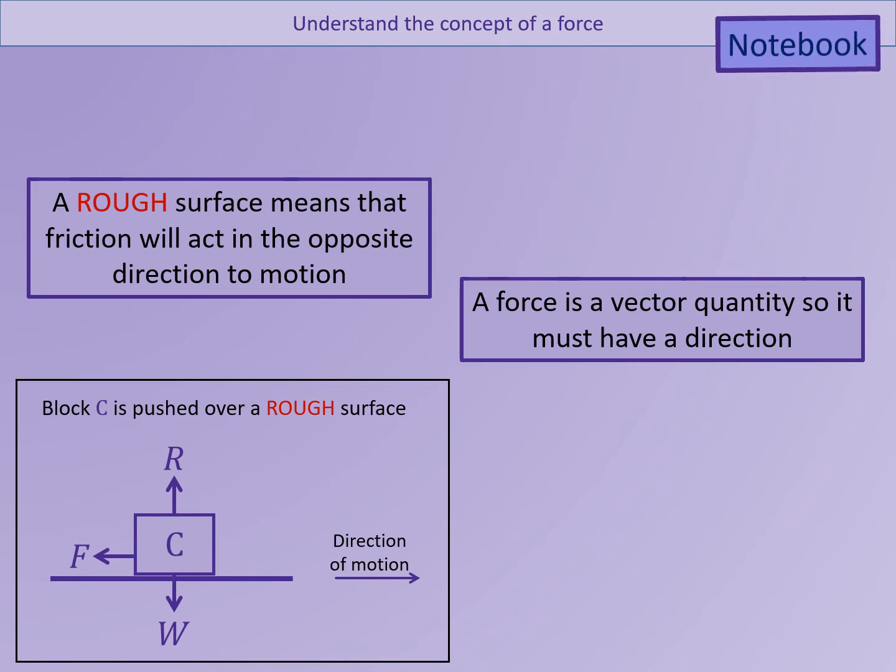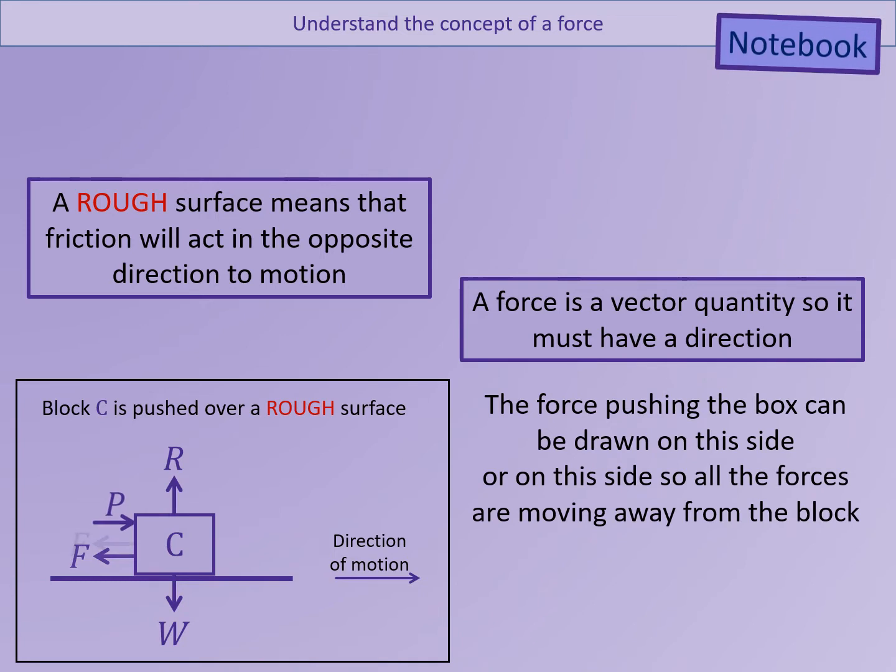A force is a vector quantity, so it must have a direction. If a force was pushing on the side of a box, we could draw it on this side to show that it was being pushed from the left. However, it is often more helpful to show all forces as going away from the object. So we can actually draw the same arrow pointing in the same direction, but coming out of the box. Essentially, this is considering it like a pulling force rather than a pushing force. The calculations would remain the same.